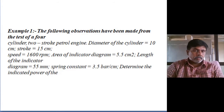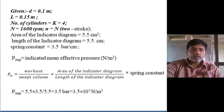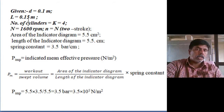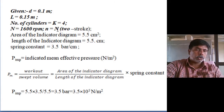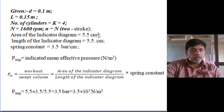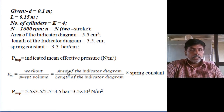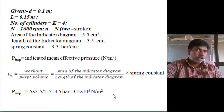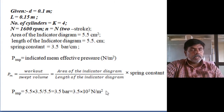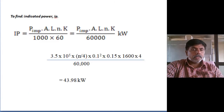Determine the indicated power of the engine. Diameter is 0.1 m, length 0.15 m, number of cylinders 4, speed 1600 RPM, so small n equals N. Area of indicator diagram is 5.5 cm squared, length is 5.5 cm, spring constant is 3.5 bar per cm. Mean effective pressure equals 5.5 into 3.5 divided by 5.5, giving 3.5 bar, which converts to 3.5 into 10 to the power 5 Newton per meter square.